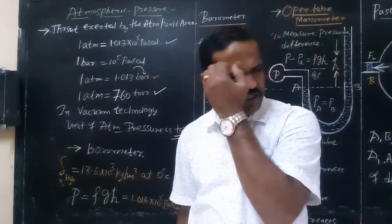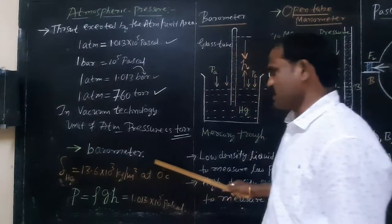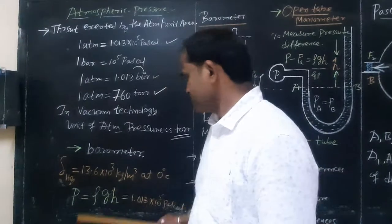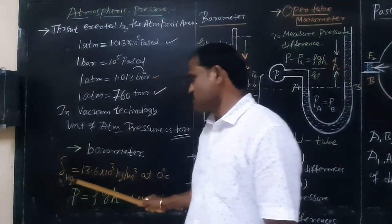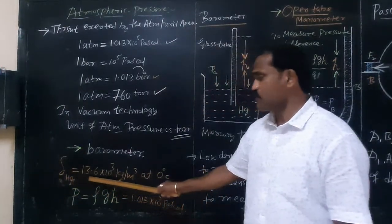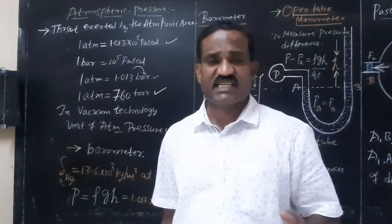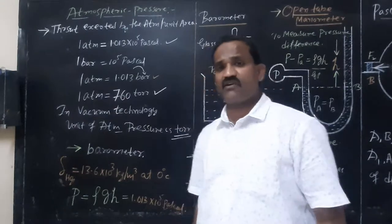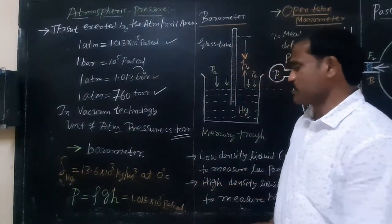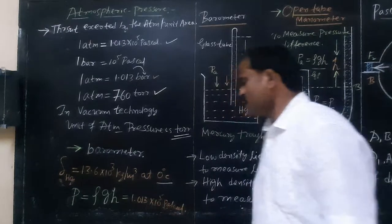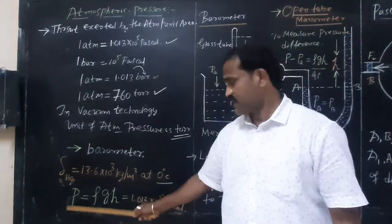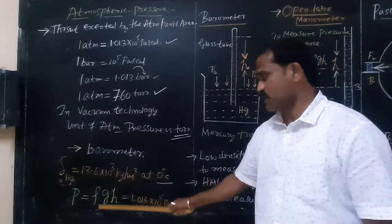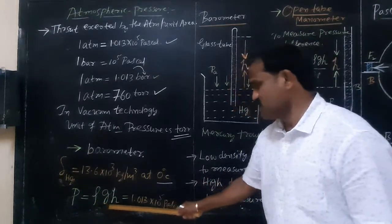Atmospheric pressure is measured by a device called a barometer. The density of mercury — the liquid with the highest density — is 13.6 × 10³ kg per meter cube at 0°C. The pressure exerted by the liquid at a given point is equal to rho times g times h.